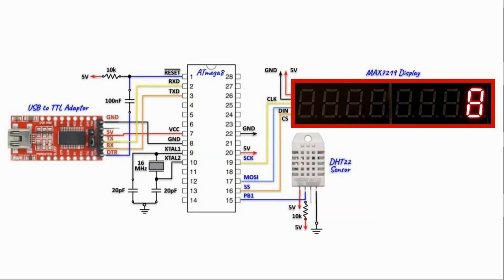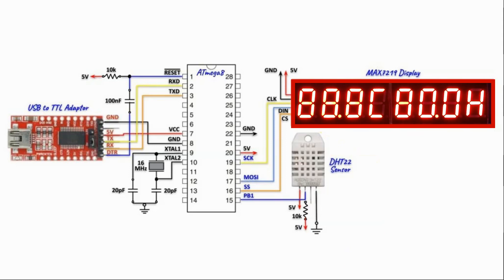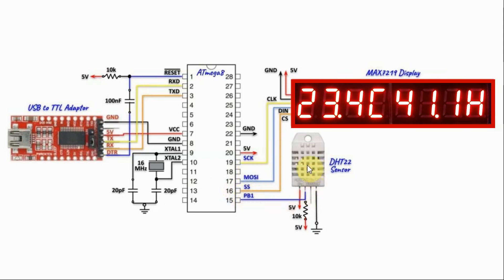A circuit diagram of the implemented system is shown here. We have the MAX7219 display interfaced with the ATmega8 microcontroller using an SPI connection, and the DHT22 sensor interfaced to a digital pin of the controller.